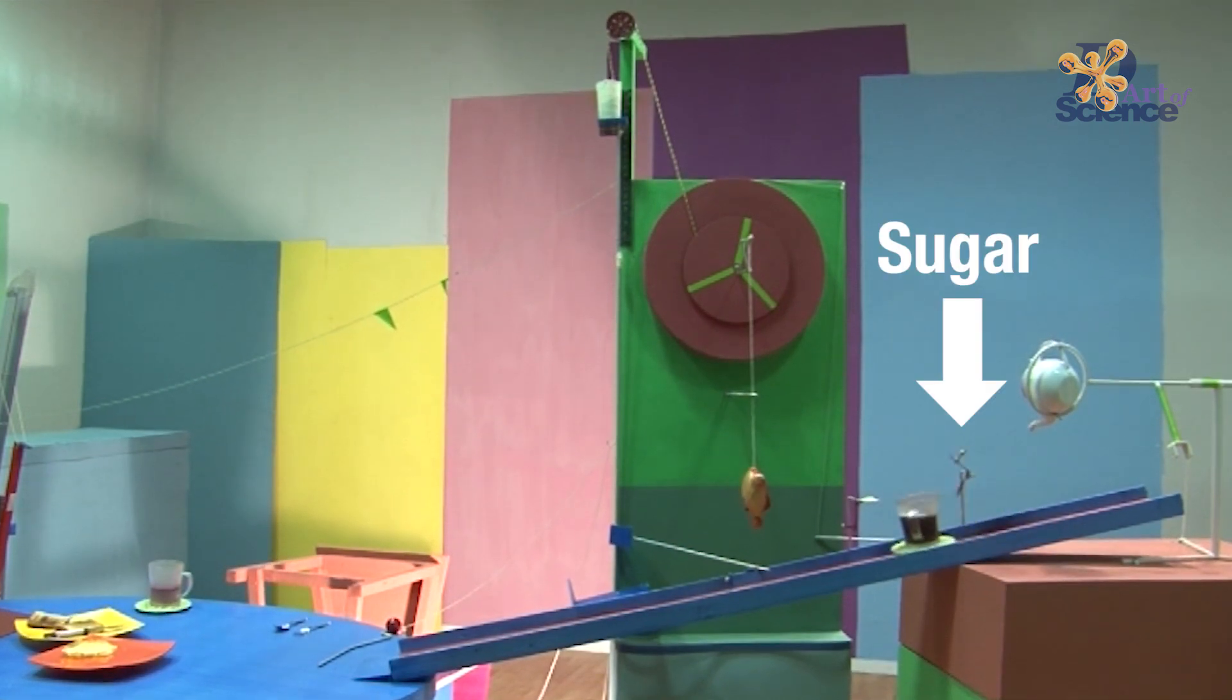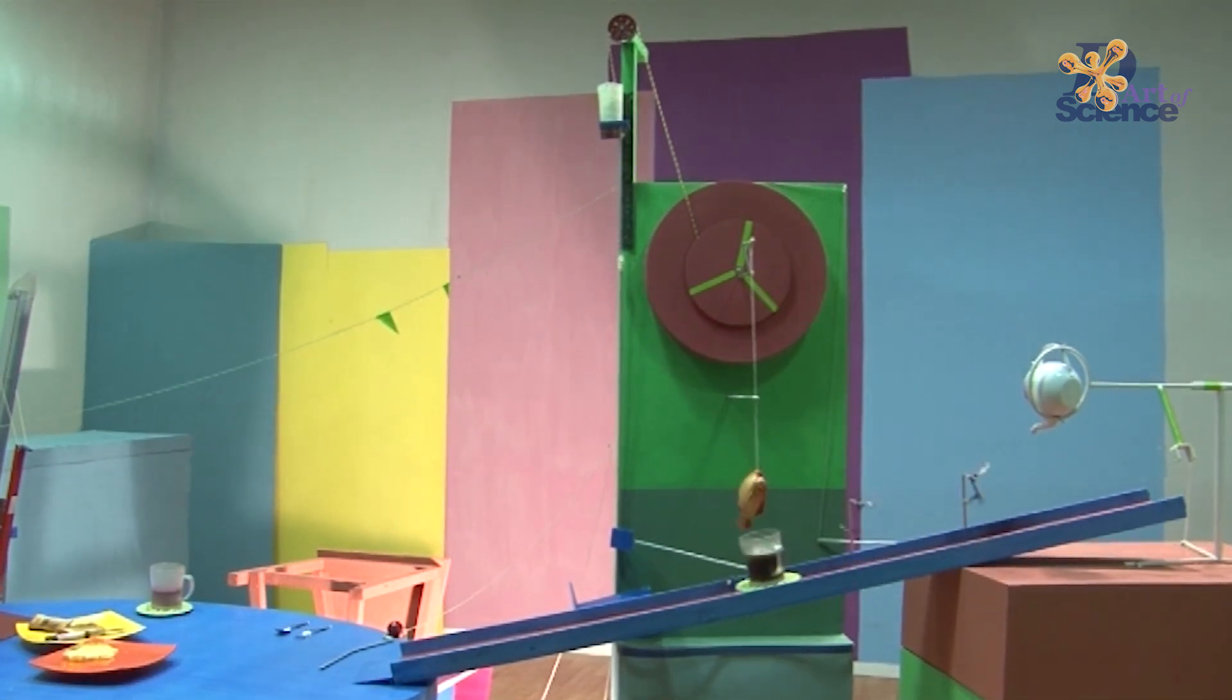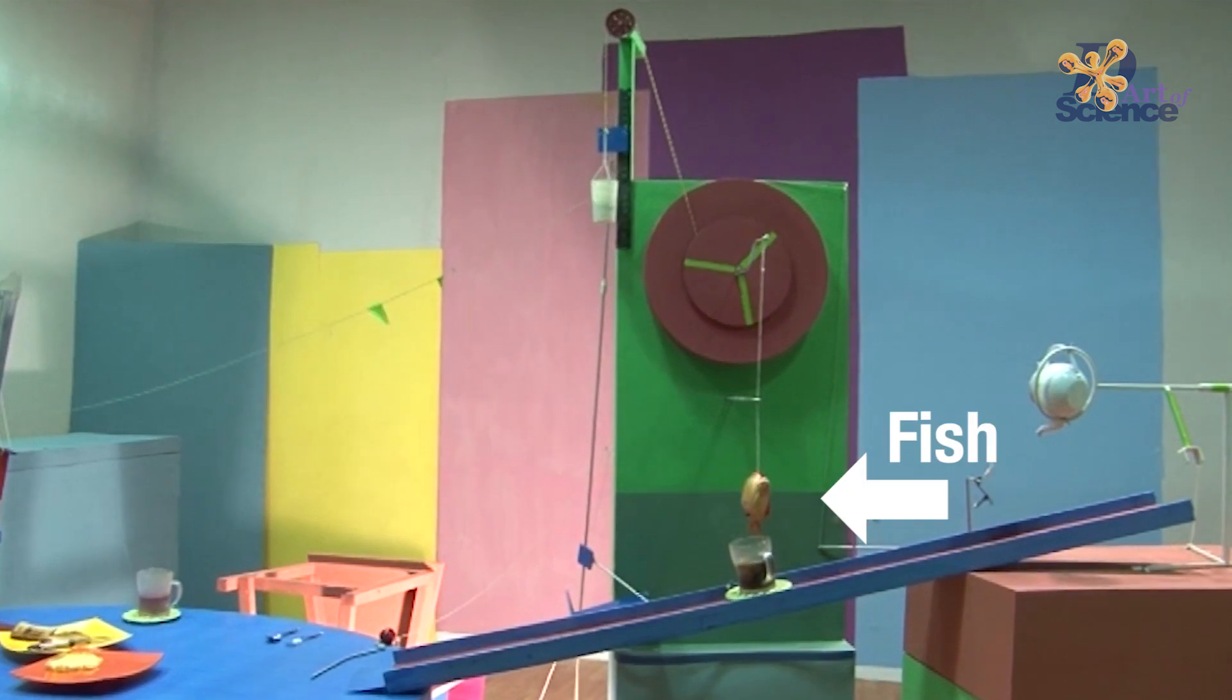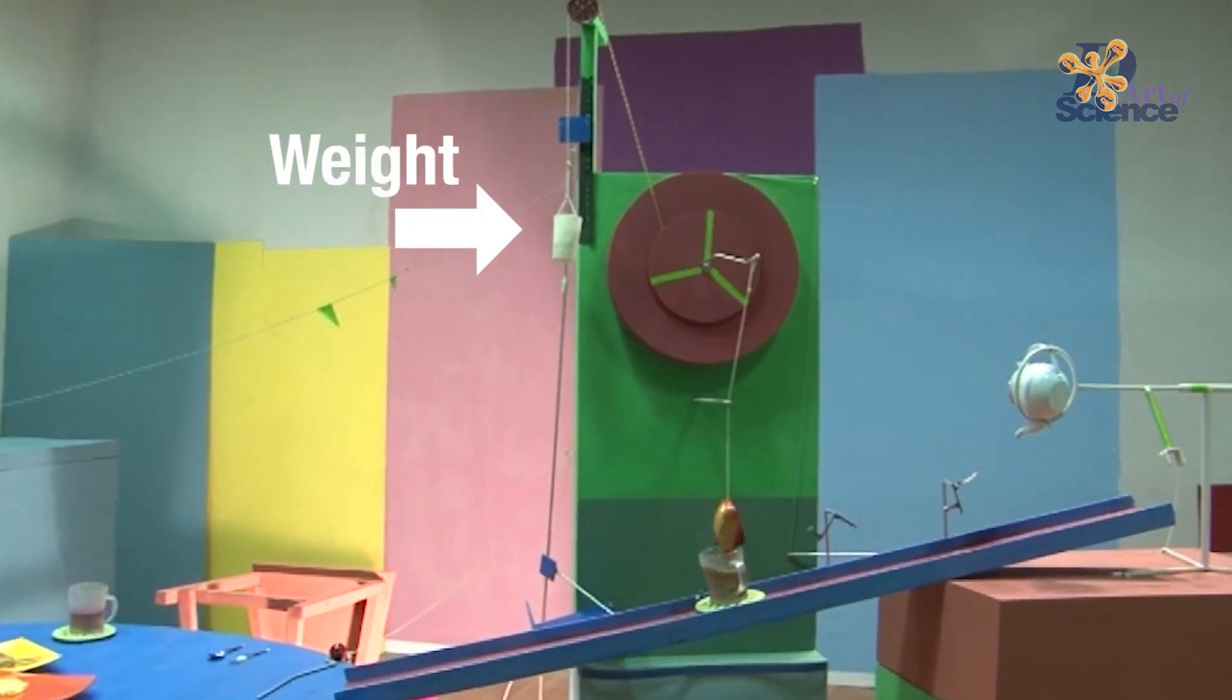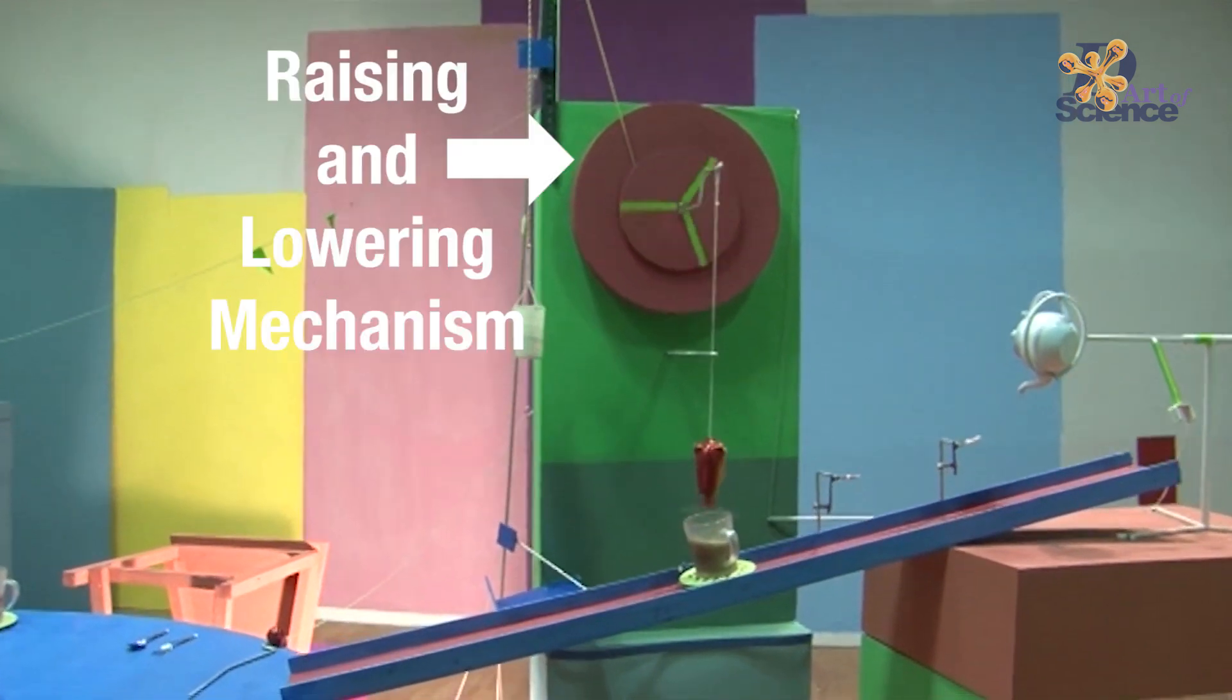The cup releases because of its weight and tilts a spoon of sugar and then milk on the way and then it stops under a fish with its tail flapping. And it also releases a weight which starts falling and rotating a wheel that raises and lowers this fish onto the cup to stir it twice.